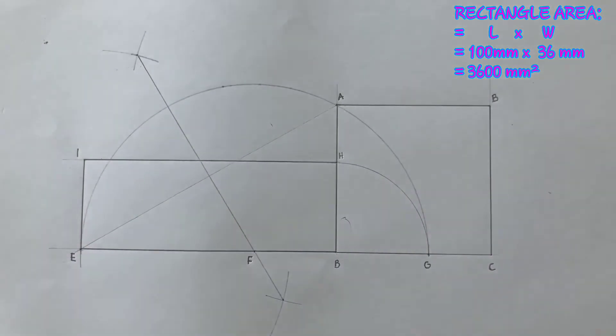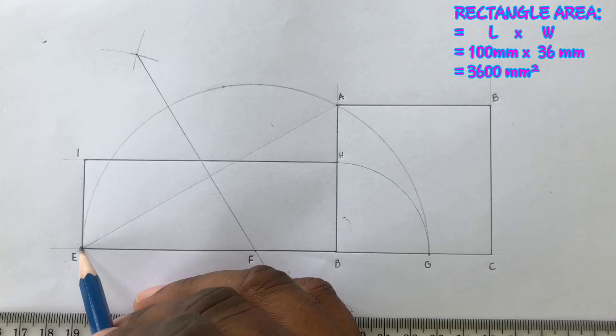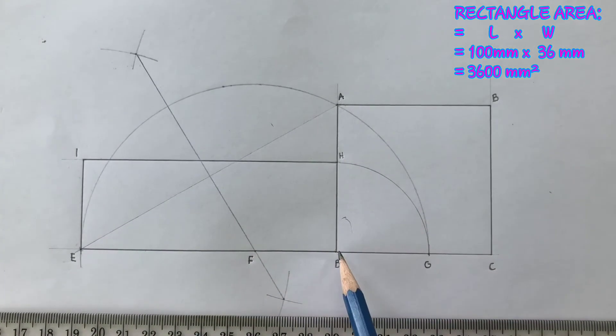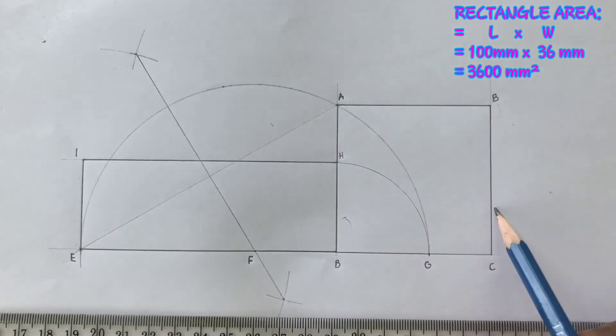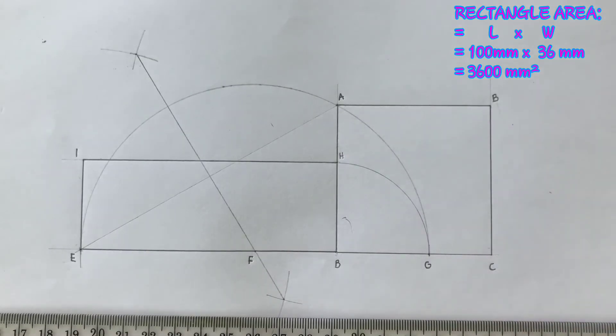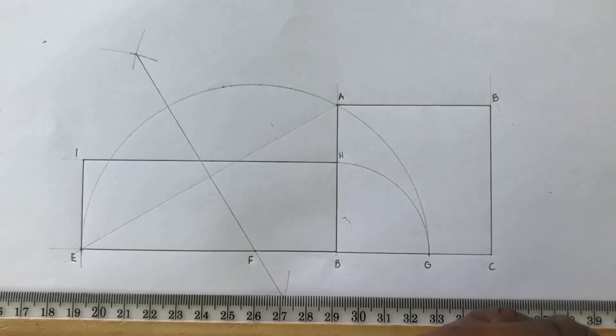Rectangle IEBH and also our square ABCD calculated area is 3600 millimeter square. Now border your paper and complete your title block.